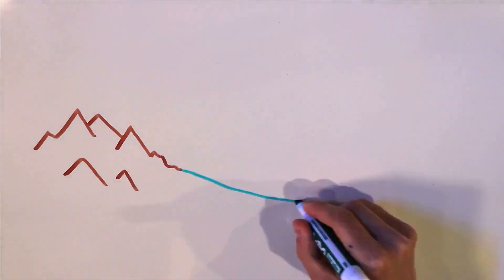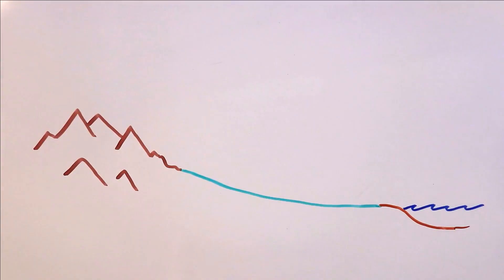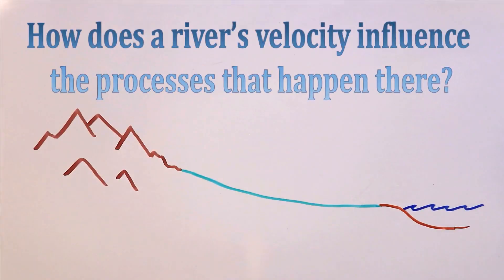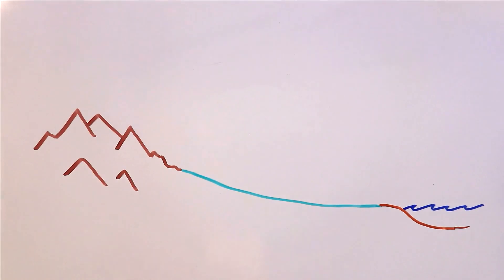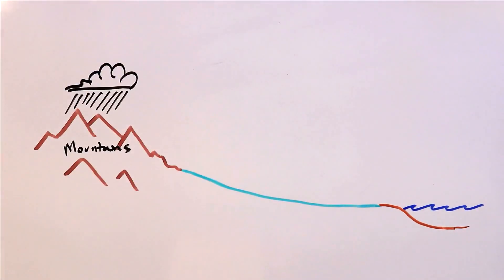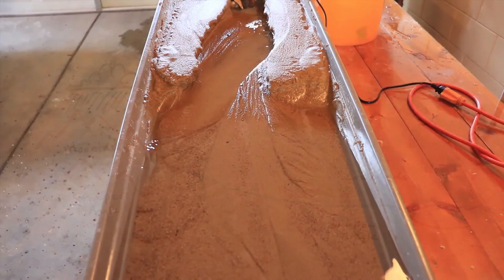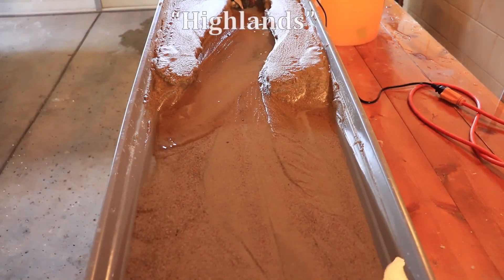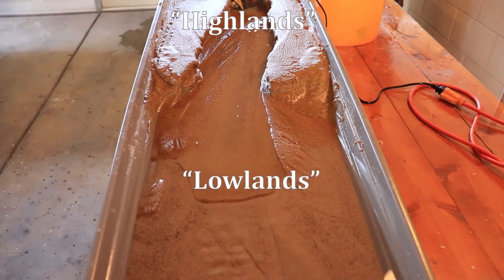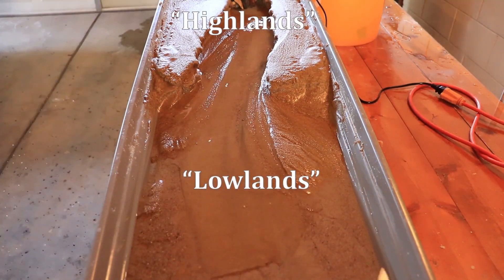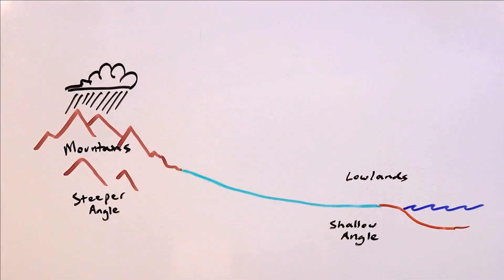The first question we can address is: how does a river's velocity influence the processes that happen there? Here is a landscape complete with mountains, lowlands, and some space between them. In our stream table, the highlands were at the top and the lowlands at the bottom. If you've ever seen a mountainous area, you'd know they have steeper angles, while lowland areas have a shallower angle or are even totally flat.